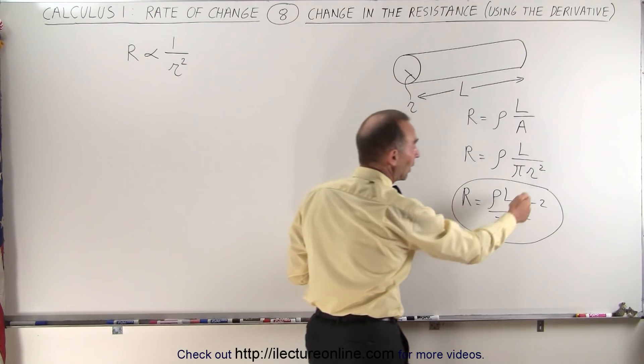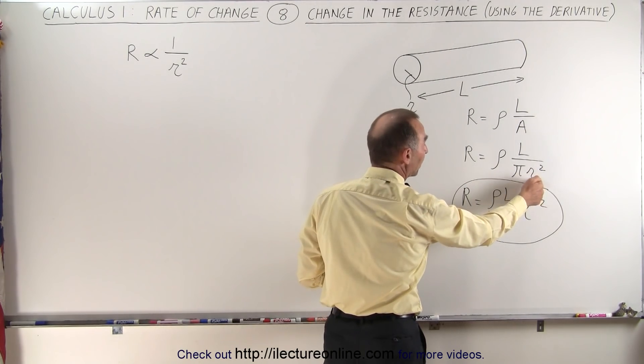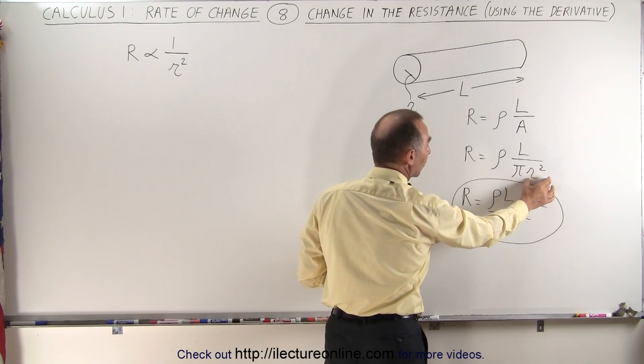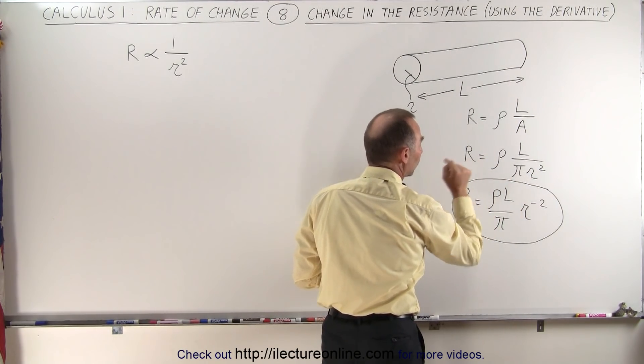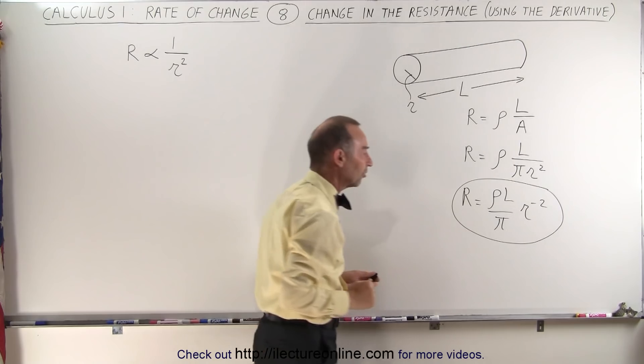And since the radius is in the denominator, the bigger the radius, the smaller the resistance.